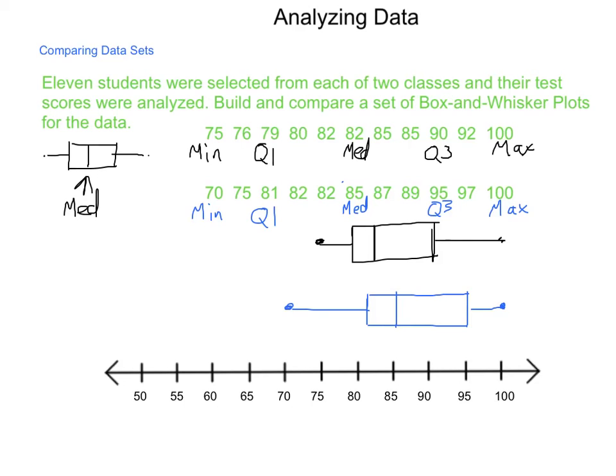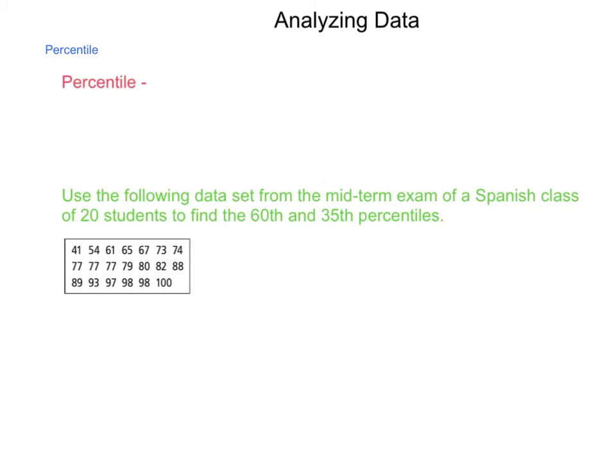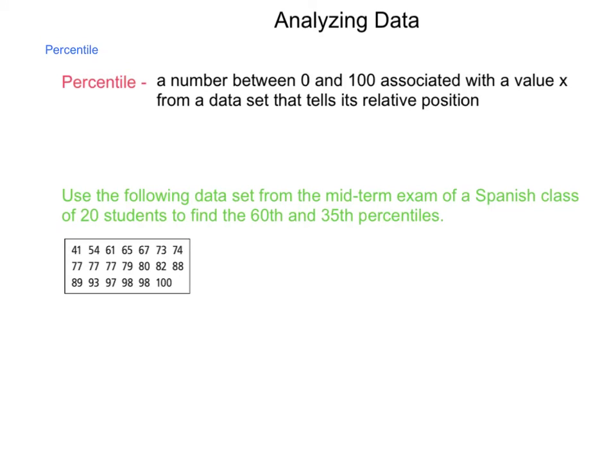Something else that's used often in statistics is the concept of the percentile. So we're going to look at that. Now a percentile is a number between 0 and 100 associated with a value x from a data set, that tells its relative position.